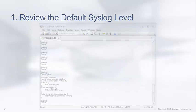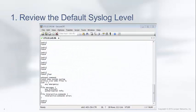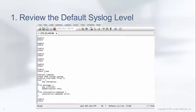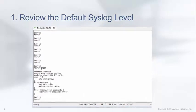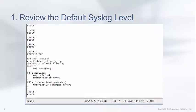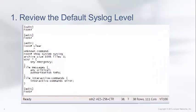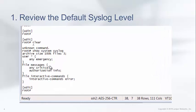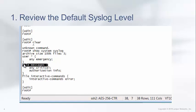Let's review the default syslog level. In Junos OS, VPN events are written to the syslog file named messages. By default, only critical level messages are written to the syslog file.